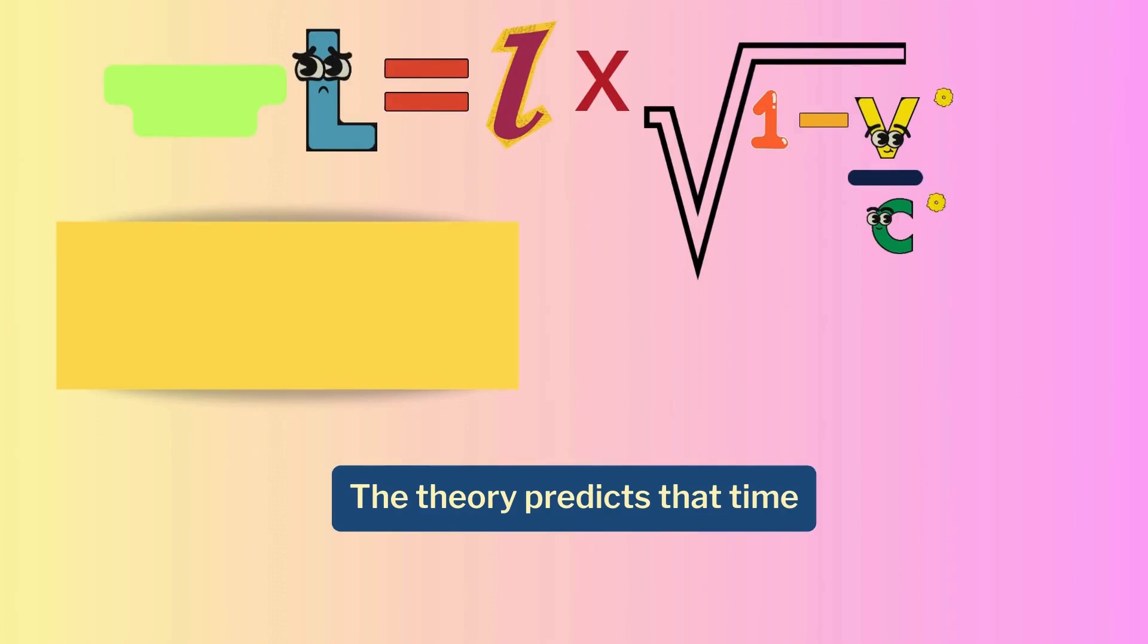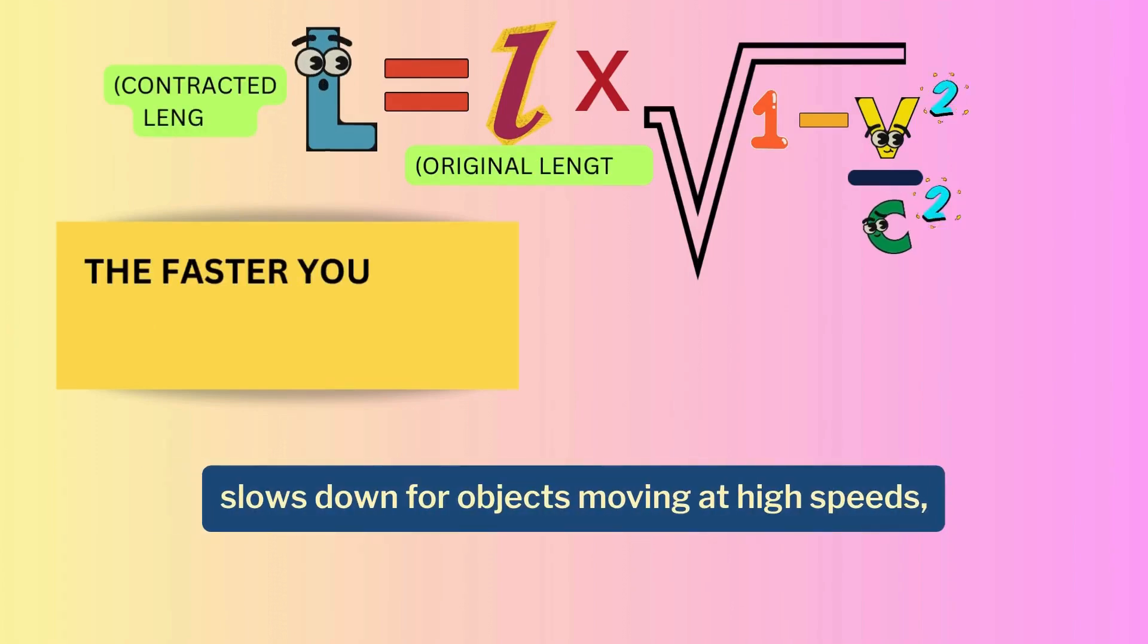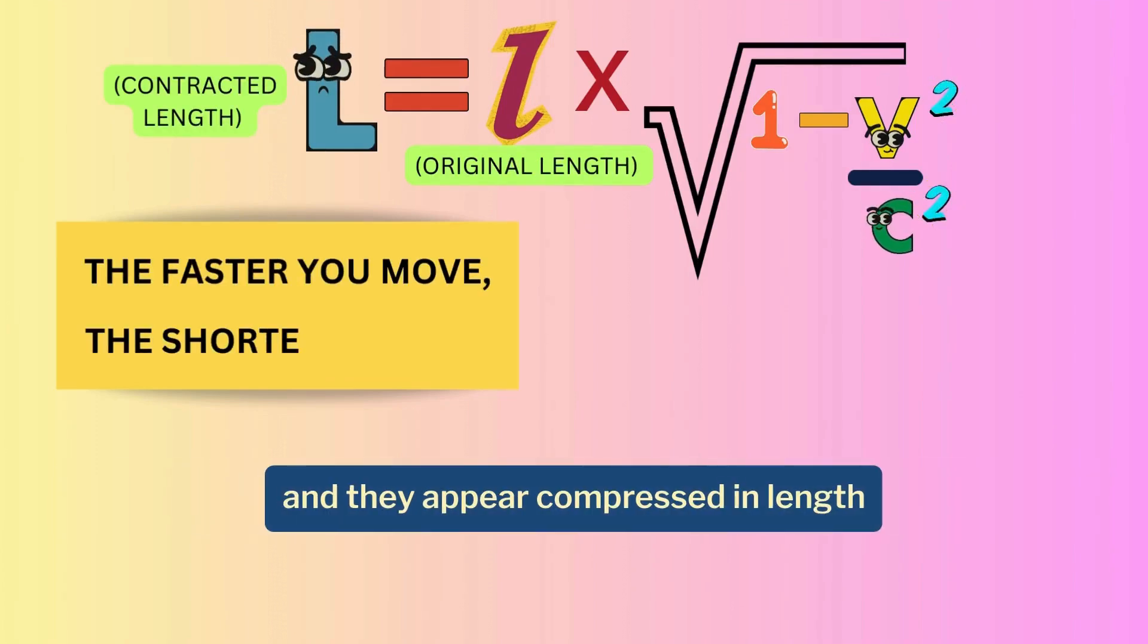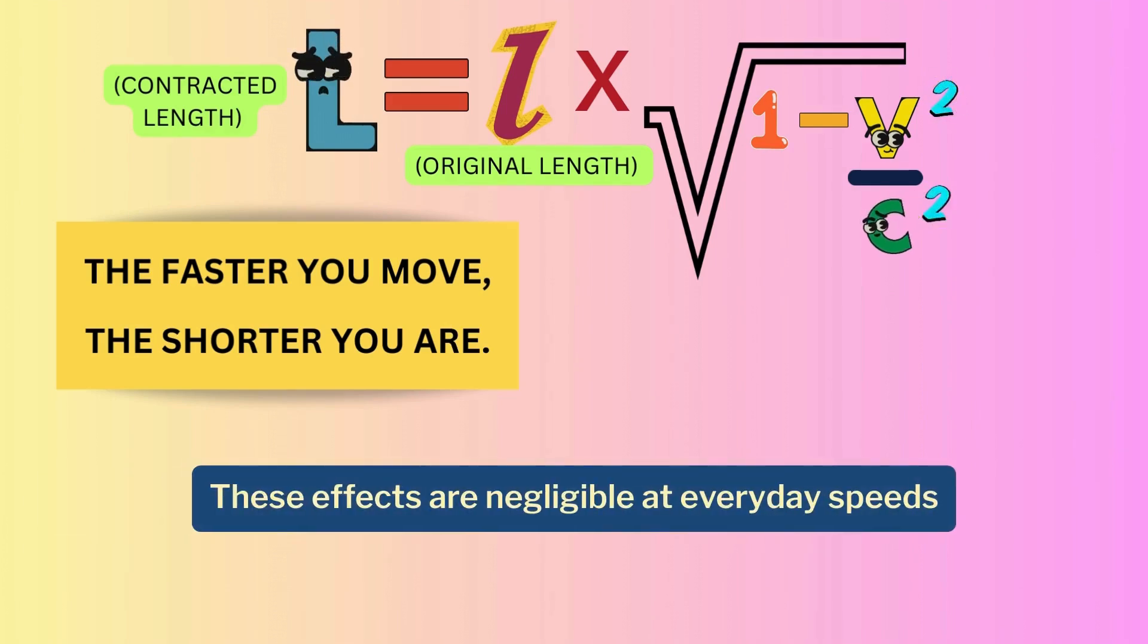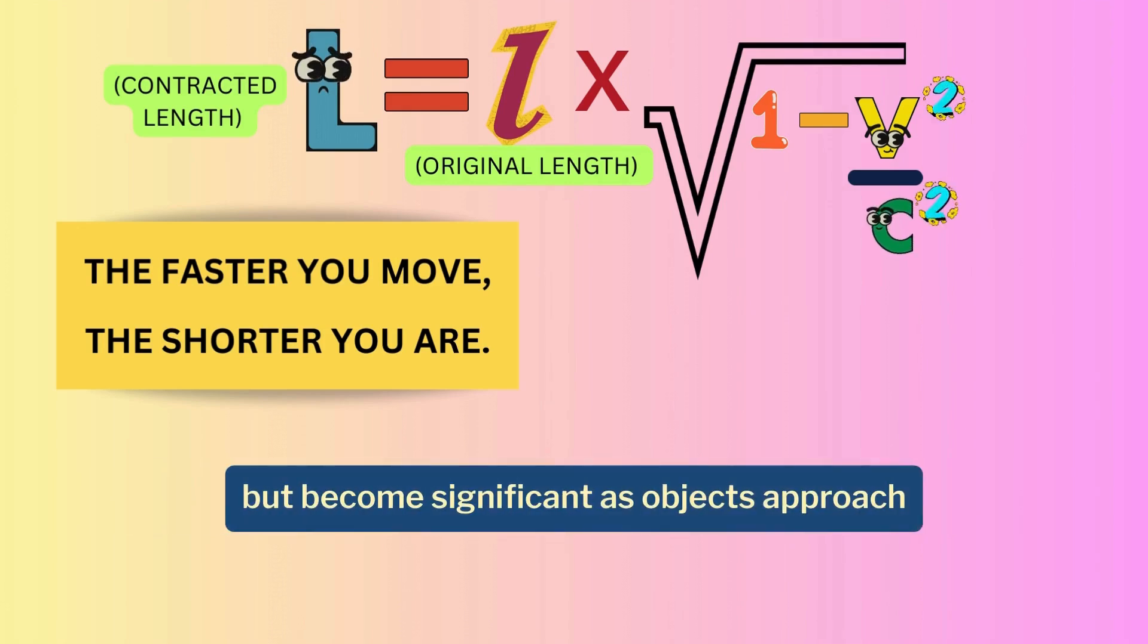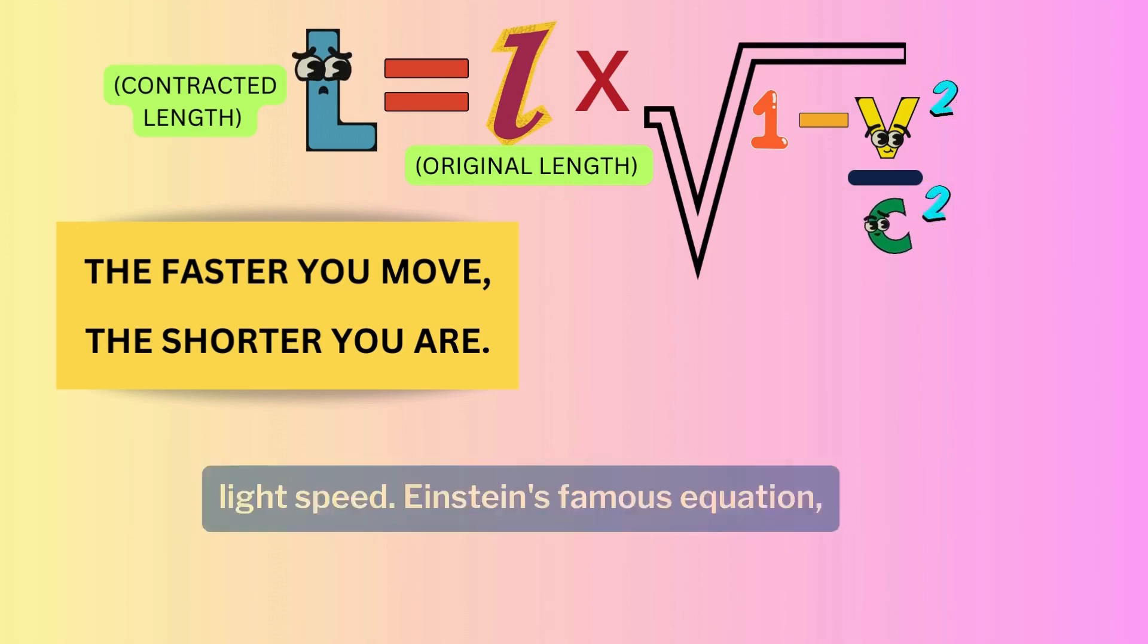The theory predicts that time slows down for objects moving at high speeds, and they appear compressed in length along the direction of their motion. These effects are negligible at everyday speeds but become significant as objects approach light speed.